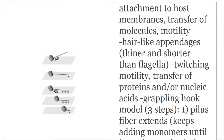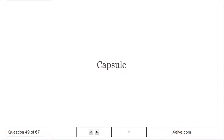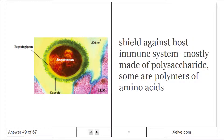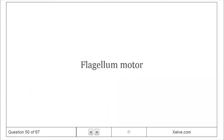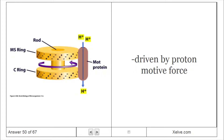The hook model for twitching motility has three steps: 1. The pilus fiber extends, adding monomers until it touches a surface. 2. The fiber binds to the substrate. 3. The fiber retracts. The capsule shields against the host immune system, mostly made of polysaccharide; some are polymers of amino acids. The flagellum motor is driven by proton motive force.